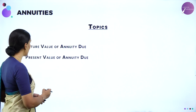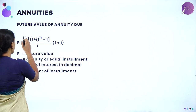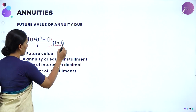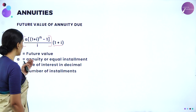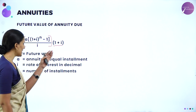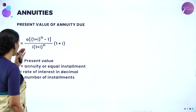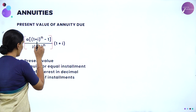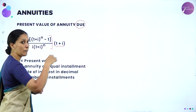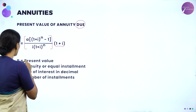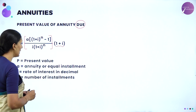We have formulas to calculate future value as well as present value of annuity due. The future value formula is the same as annuity immediate but multiplied by (1 plus I). Here F is the future value, A is the annuity or equal installment, I is the rate of interest in decimal, and N is the number of installments. Similarly, the present value formula of annuity due is the present value of annuity immediate multiplied by (1 plus I), where P is present value, A is the annuity, I is the rate of interest in decimal, and N is the number of installments.